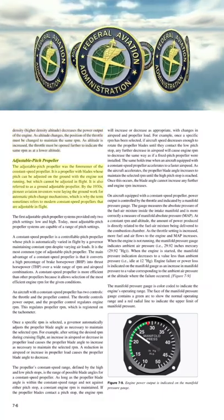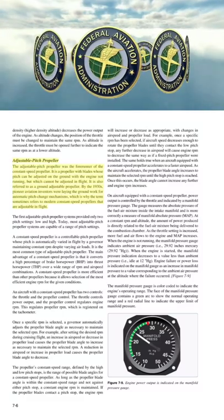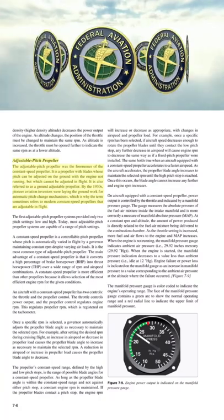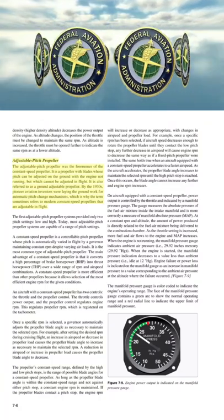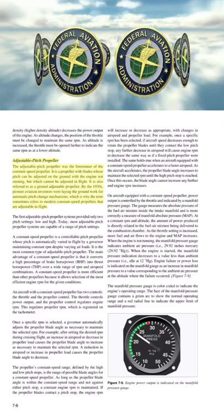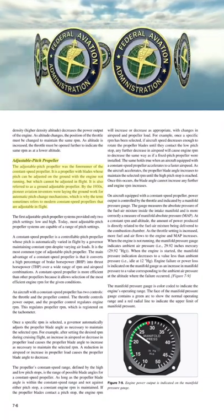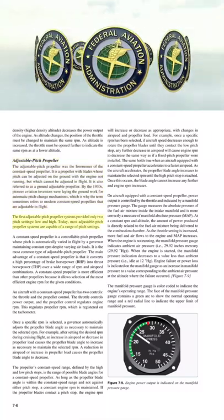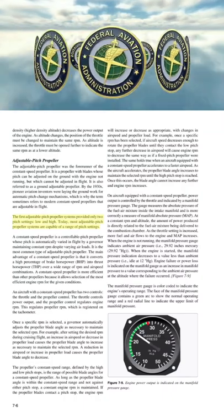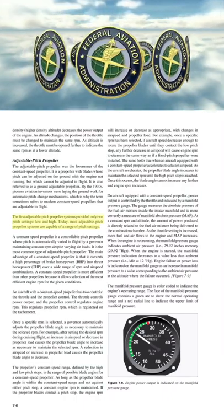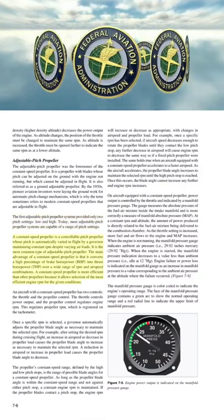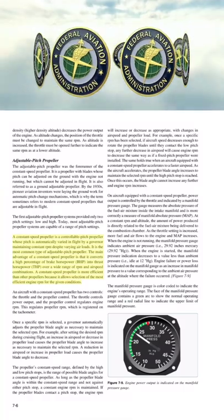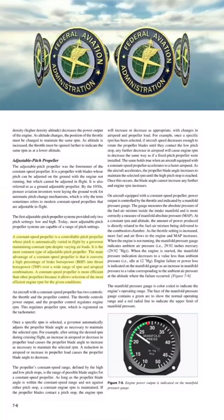The adjustable pitch propeller was the forerunner of the constant speed propeller. It is a propeller with blades whose pitch can be adjusted on the ground with the engine not running, also referred to as a ground adjustable propeller. By the 1930s, inventors were laying the groundwork for automatic pitch change mechanisms. The first adjustable pitch propeller systems provided only two pitch settings, low and high; today, most are capable of a range of pitch settings. A constant speed propeller is a controllable pitch propeller whose pitch is automatically varied in flight by a governor maintaining constant RPM despite varying air loads.